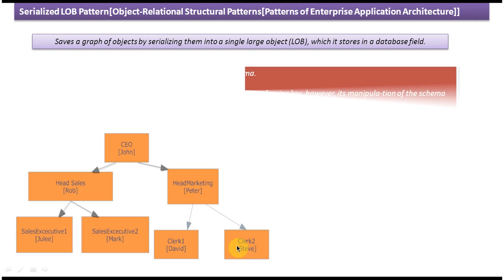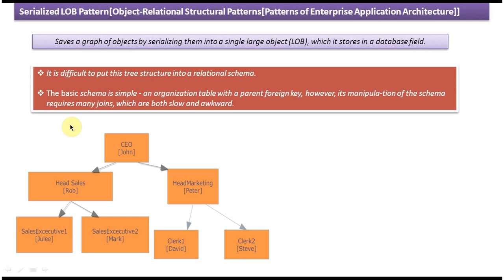If you want to store this tree structure into a relational schema, it is difficult. We can make it by creating an organization table with a parent key, but manipulation of this schema requires a lot of joins. And if you use joins, then automatically performance will decrease. So it is not good.